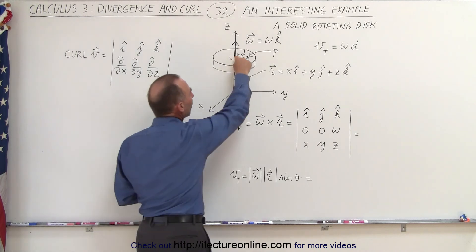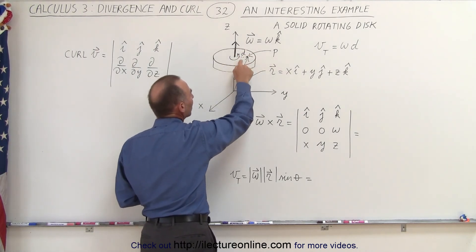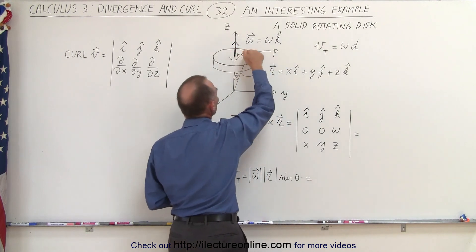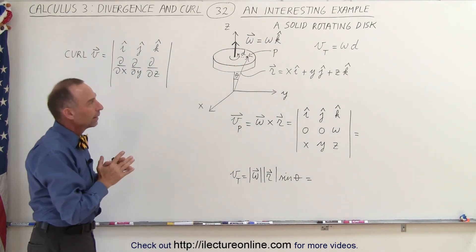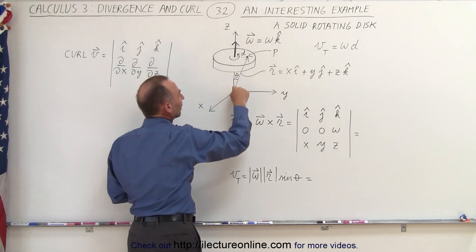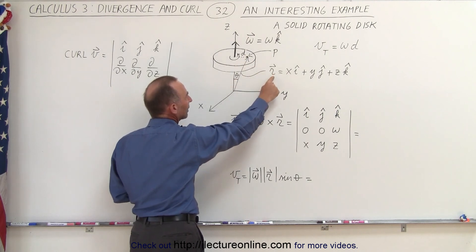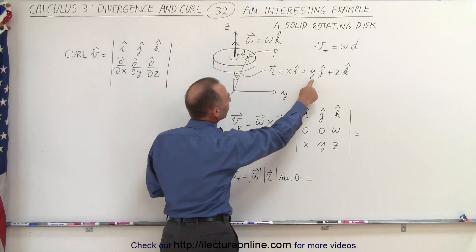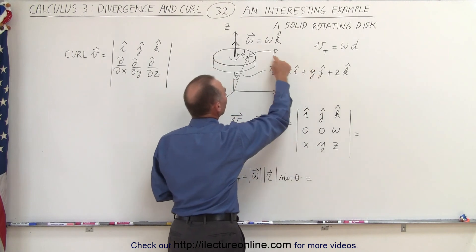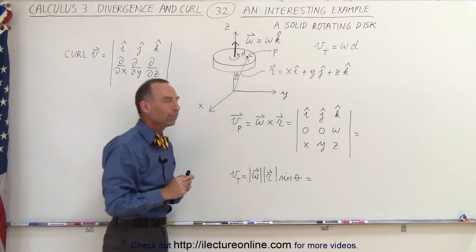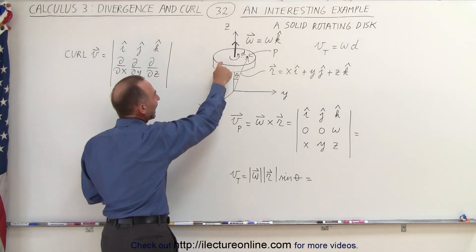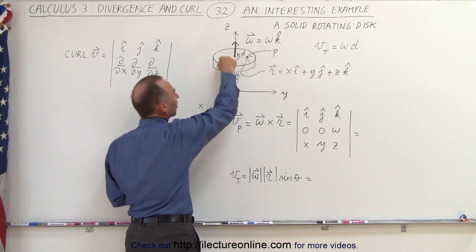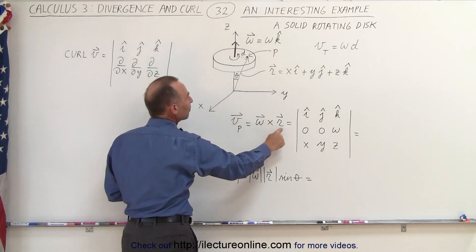The velocity at any point on the disc is simply equal to omega, the angular velocity in radians per second, times the distance away from the center of rotation. We can pick any point on the disc and the directional vector from the origin to that point is the position vector, written as x*i + y*j + z*k, and we label any point on the disc as point p. The velocity at point p is simply the cross product of the angular velocity vector omega with the position vector r.